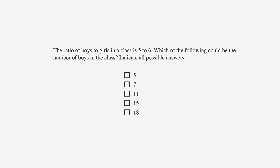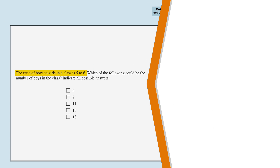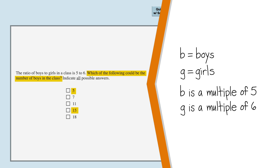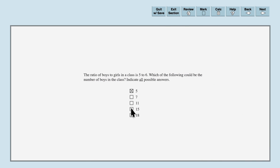We will go through exactly the same steps as before. We're told that the ratio of boys to girls is 5 to 6. Let's say that B and G stand for boys and girls respectively. If we rewrite the problem mathematically, this means that B must be a multiple of 5 and G must be a multiple of 6. We are then asked which answer choices could represent the number of boys, or the value of B. Solving strategically, we can see that answer choices 5 and 15 are both multiples of 5. Since we didn't have to compute anything, there isn't much to check, so we just select the two answers and move on.